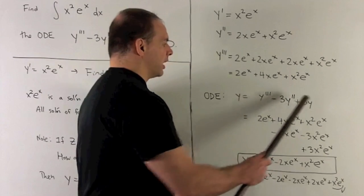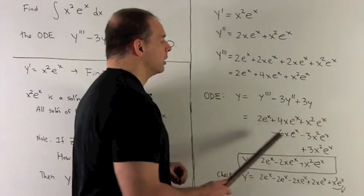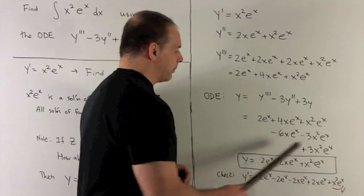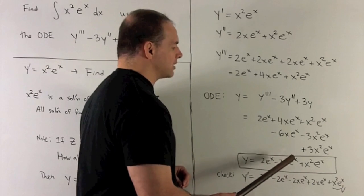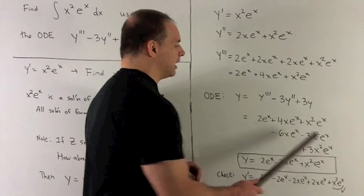And now we just put our items in. So what happens? Put our items in, we add them up. And what do I get? 2e to the x minus 2x e to the x plus x squared e to the x.